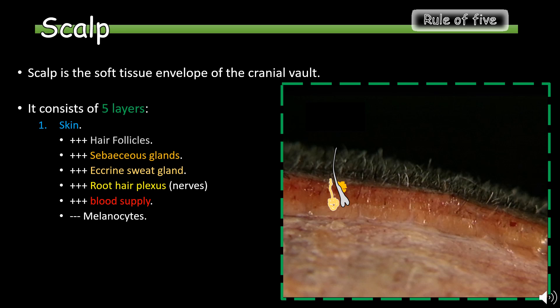The first layer is the skin, which consists of hair follicles beginning at the surface of the epidermis. The skin contains mainly two types of glands: sebaceous glands and eccrine sweat glands. Sebaceous glands are microscopic exocrine glands that secrete an oily or waxy matter called sebum, to lubricate and waterproof the skin and hair.